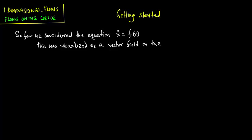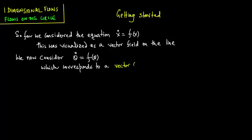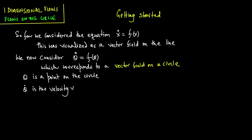We now consider theta-dot is equal to f of theta, which corresponds to a vector field on a circle. So, theta is a point on the circle and theta-dot is the velocity vector at that point, which follows theta-dot is equal to f of theta.